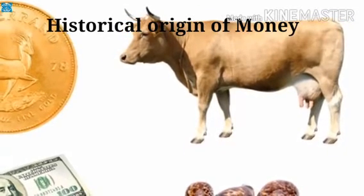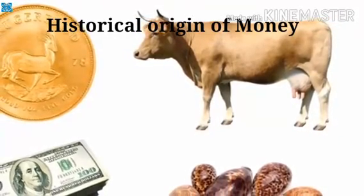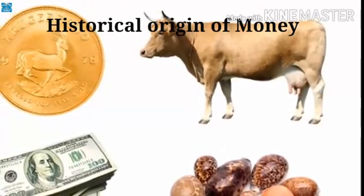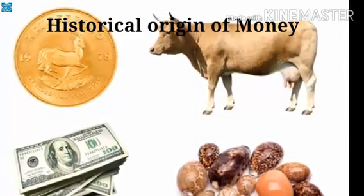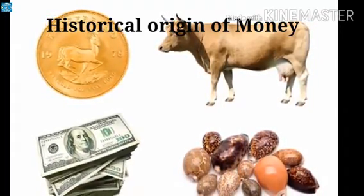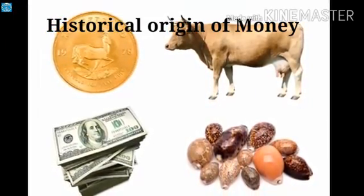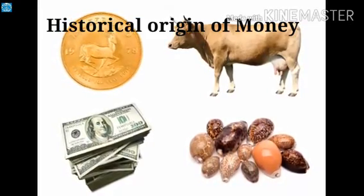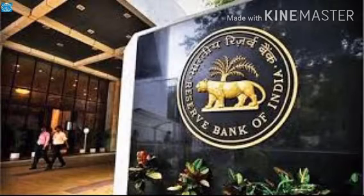But because of many disadvantages like lack of double coincidence of wants and lack of a common unit of value, precious metals like gold, silver, copper, etc. began to be used as money. But even here, carrying a large sum of money and traveling from one place to another for trading was unsafe. So this led to the introduction of paper money. Nowadays, this paper money is issued by the Central Bank of a country, and in India we have the Reserve Bank of India, which issues currency notes on behalf of the government. No other individual, bank, or business person is permitted to issue this currency.